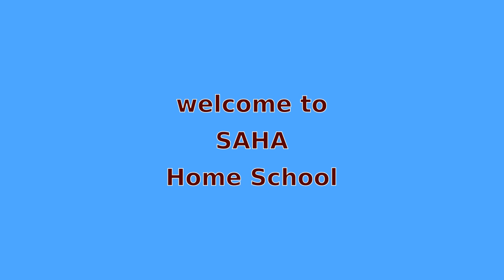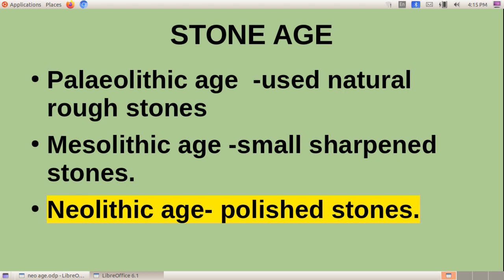In the last class, we discussed that the Stone Age is classified into Paleolithic Age, Mesolithic Age, and Neolithic Age. The names of different classifications in the Stone Age are given on the basis of stones which they used. In the Paleolithic Age, people used rough stones or stones available in their surroundings. In the Mesolithic period, people used small, sharpened stones. And in the Neolithic period, people used polished stones.